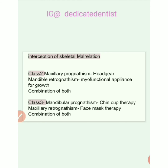For interception of skeletal malrelation: in Class II due to maxillary prognathism, we use a headgear to restrict maxillary growth. If due to mandibular retrognathism, we give a myofunctional appliance to promote mandibular growth. If Class II persists due to a combination of both, we give both headgear and a myofunctional appliance. For Class III due to mandibular prognathism, we give chin cup therapy to push the chin backward. If due to maxillary retrognathism, we give face mask therapy. If due to a combination of both, we give chin cup therapy and face mask therapy together.